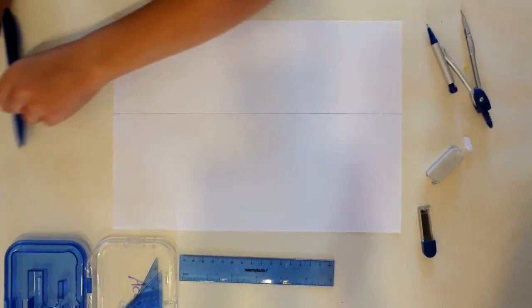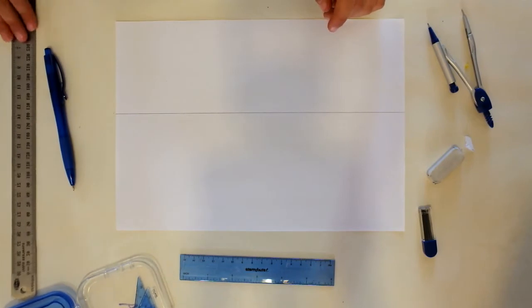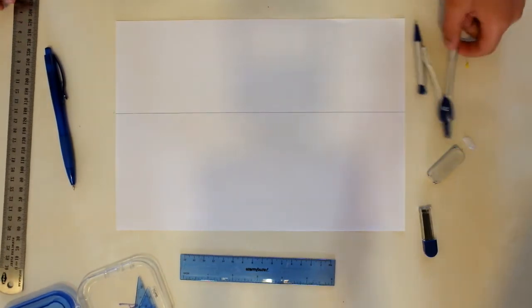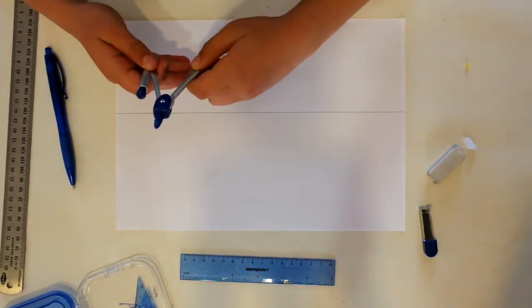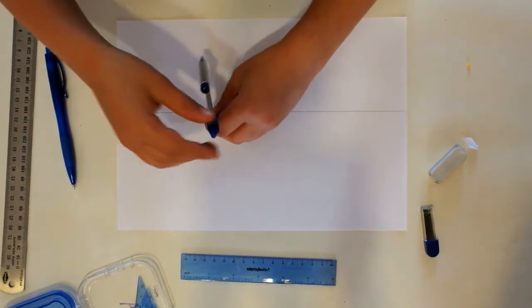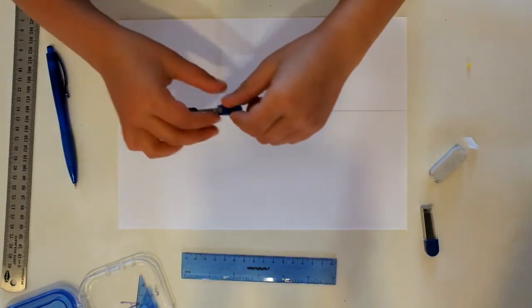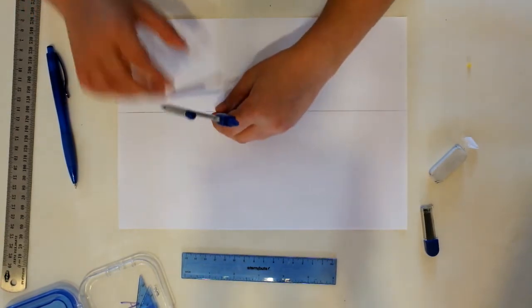And what do you know about the 8-pointed star? Well, you do two squares and that makes it. It is two squares. How many sides has a square got? Four. What are the things you can think about with four that relate to the number four?